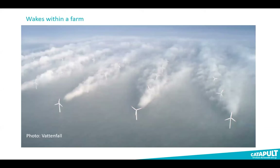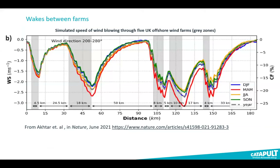Within a farm, the turbines in the front row extract energy from the wind, leaving behind a trail or wake of slower and more turbulent wind. This slower wind reduces the generation of turbines in the second row, who also slow down the wind and pass the effect down the row. This is well-understood — developers have allowed for this for a very long time.